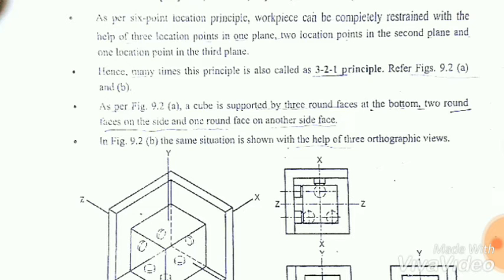As per the six-point location principle, a workpiece can be completely restrained with the help of three locating pins in one plane, two locating pins in the second plane, and one locating pin in the third plane. Hence, many times this principle is also called the 3-2-1 principle that restricts all six moments of the workpiece.